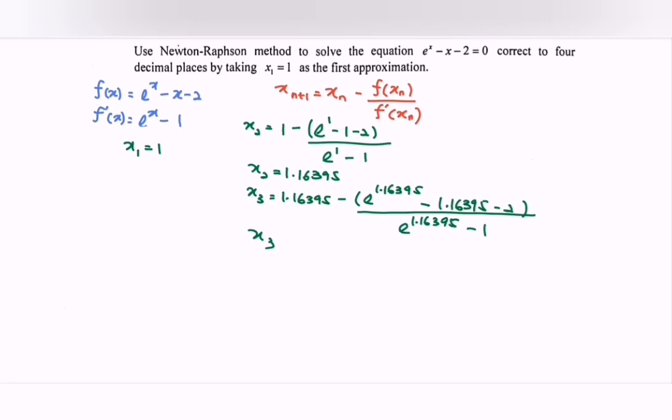This gives x₃ = 1.14642. Then x₄ = 1.14619, and x₅ = 1.14619.